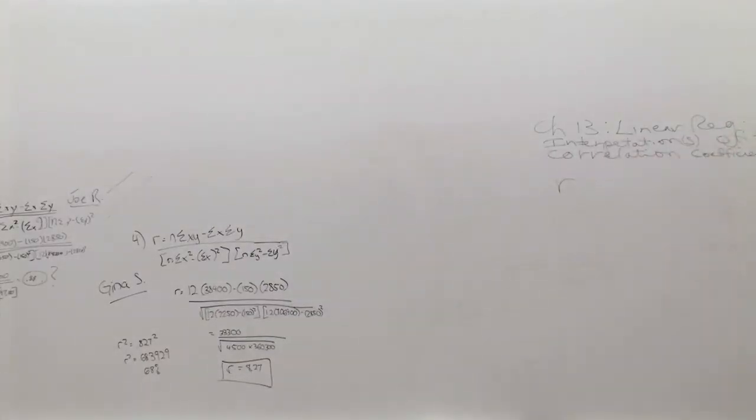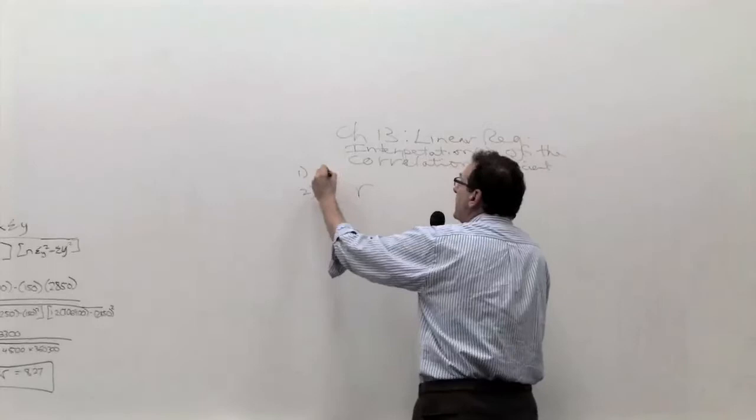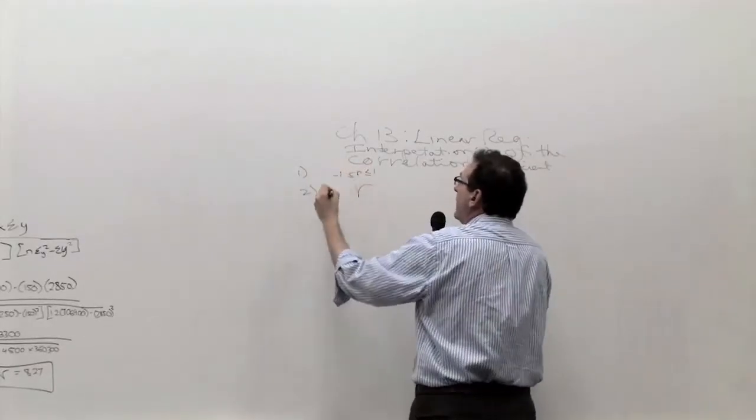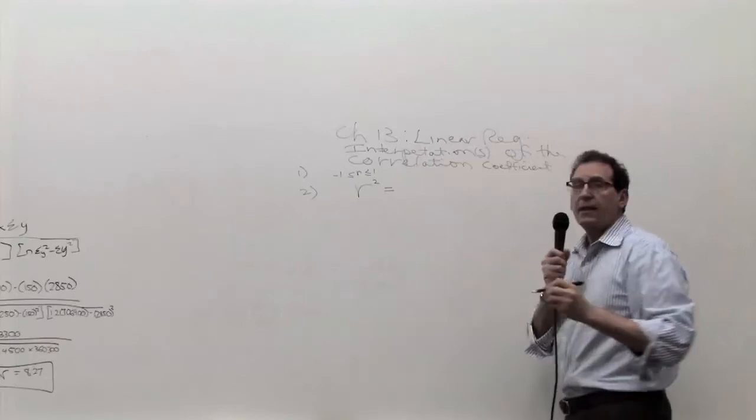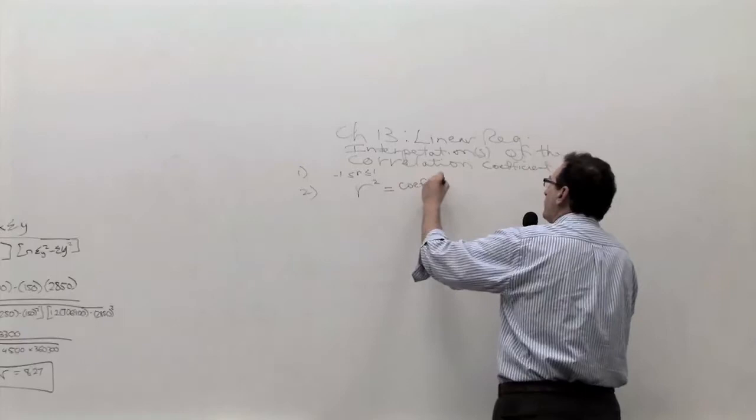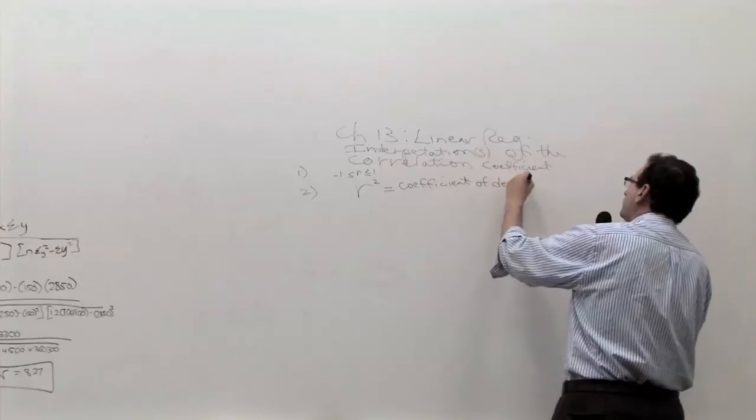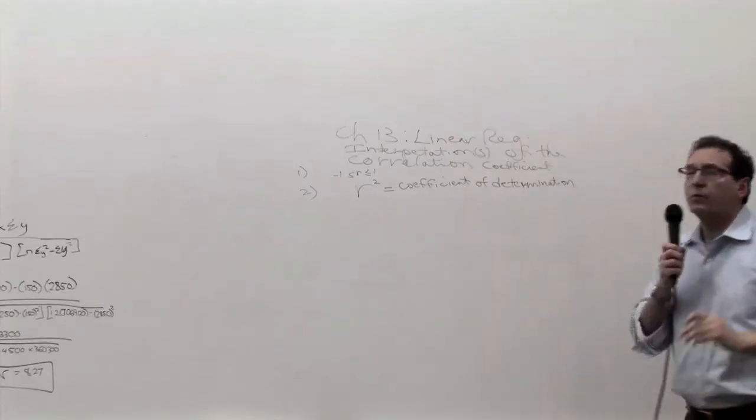And what we're going to talk about now is what does that 68 percent mean? Whenever somebody tells you 68 percent, the question that should go through your mind is 68 percent of what? So today we're having the second interpretation of the correlation. The first interpretation is simply an index between plus one and minus one. Now the second interpretation is calculating the R squared, which is expressed as R times R times 100 percent. That's called the Coefficient of Determination.